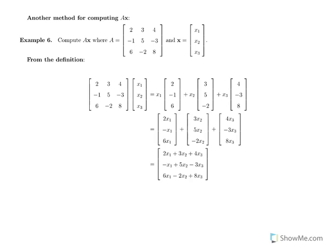The last topic in this section is an alternate way of computing AX. Starting from the definition — AX as a linear combination of columns — for a 3×3 matrix A and vector (X1, X2, X3), we get X1·A1 plus X2·A2 plus X3·A3, yielding three vectors (2X1, −X1, 6X1), (3X2, 5X2, −2X2), and (4X3, −3X3, 8X3). Adding them gives the result as a system of linear expressions in a 3×1 vector.